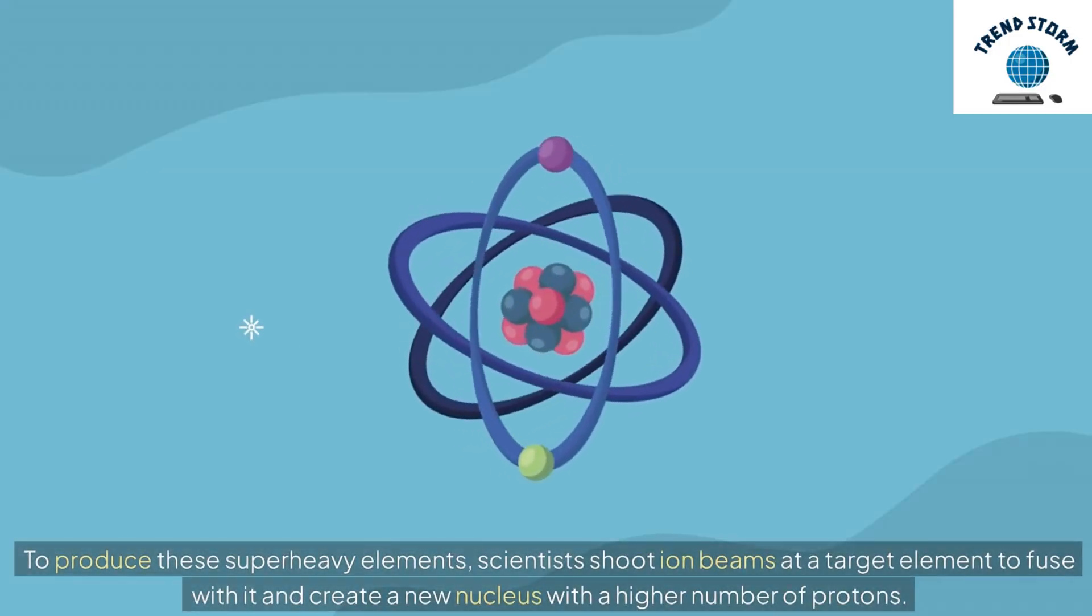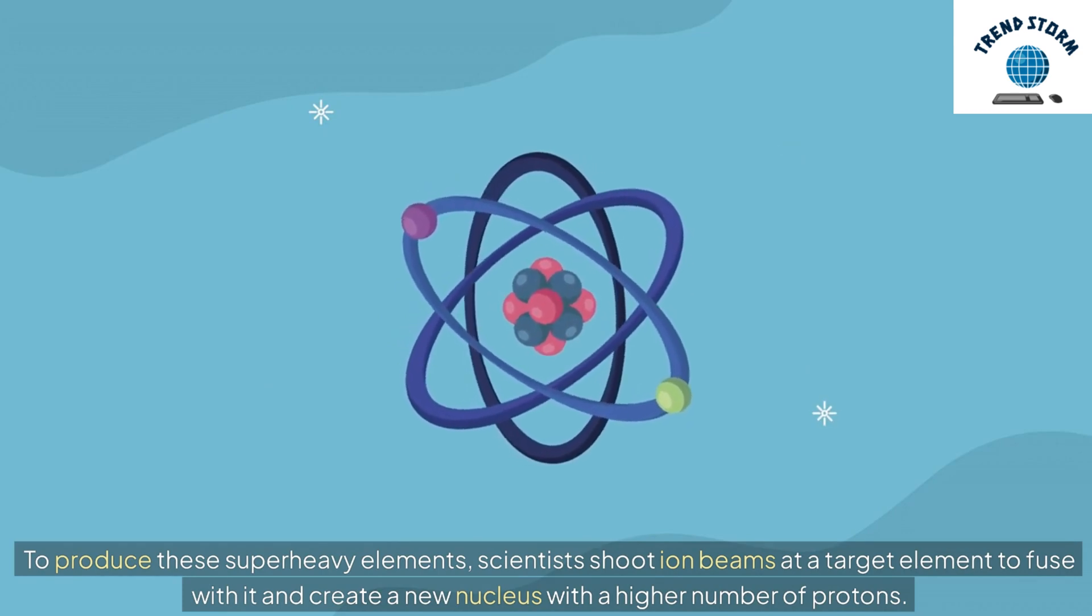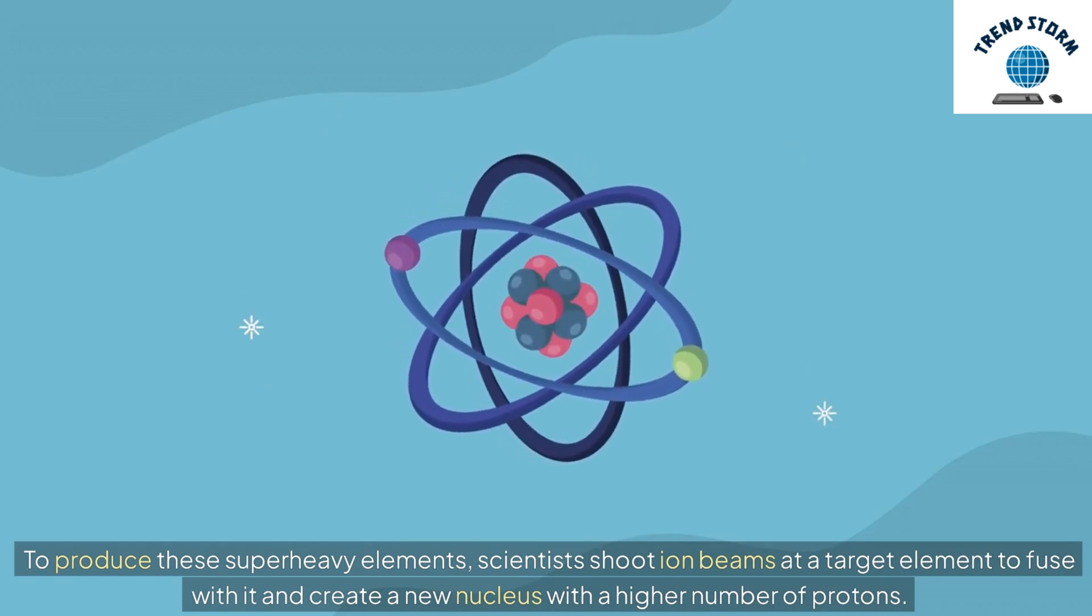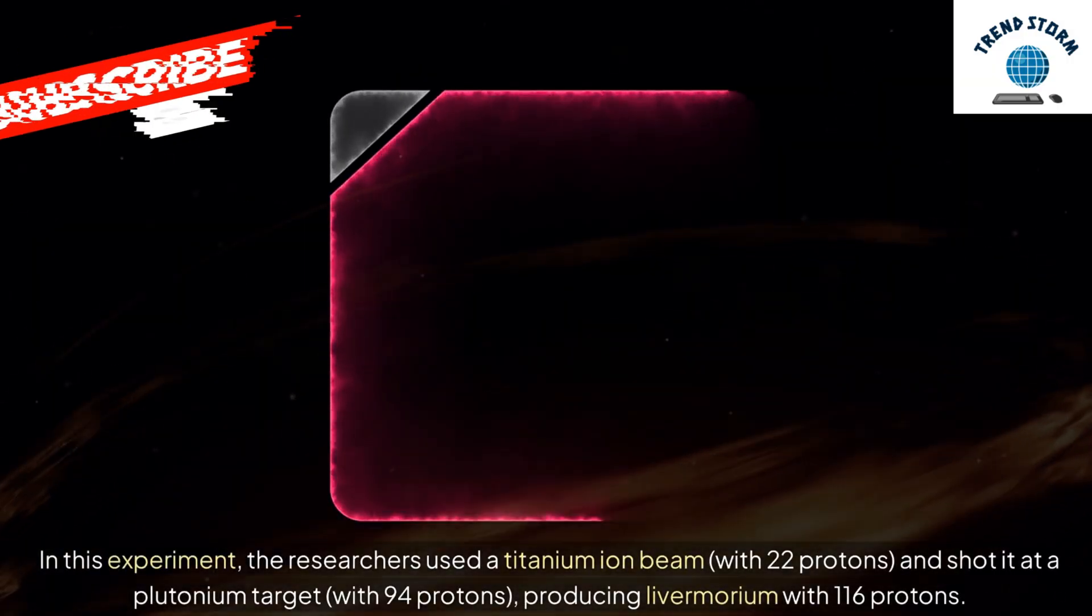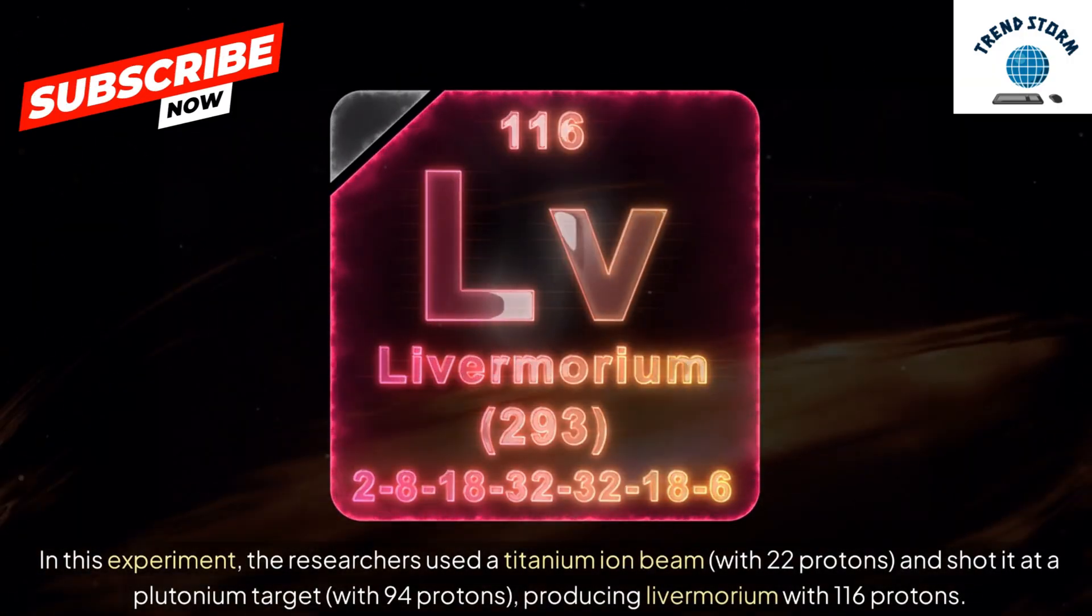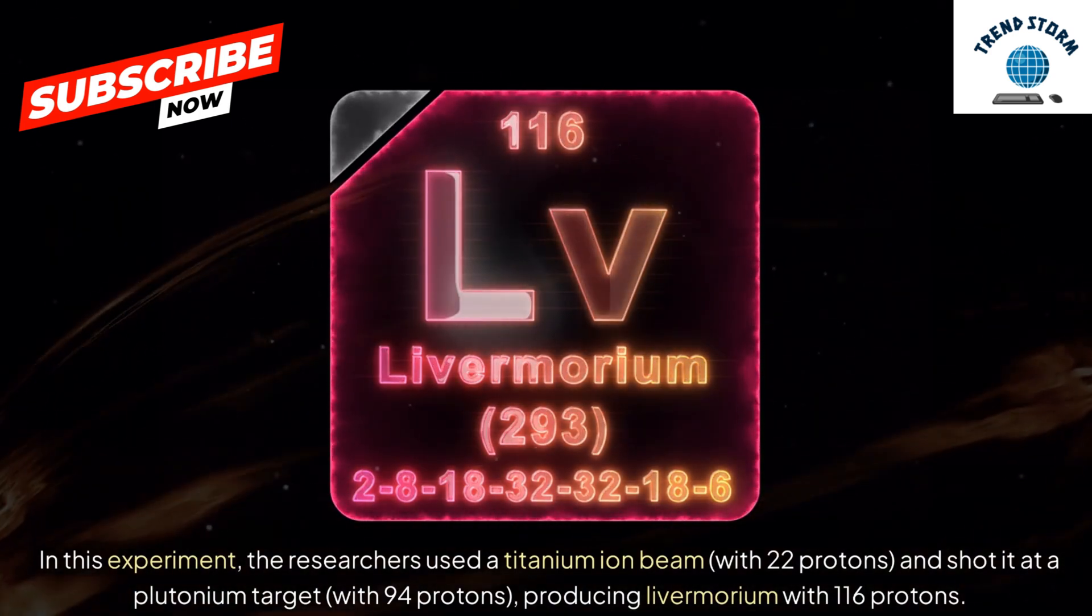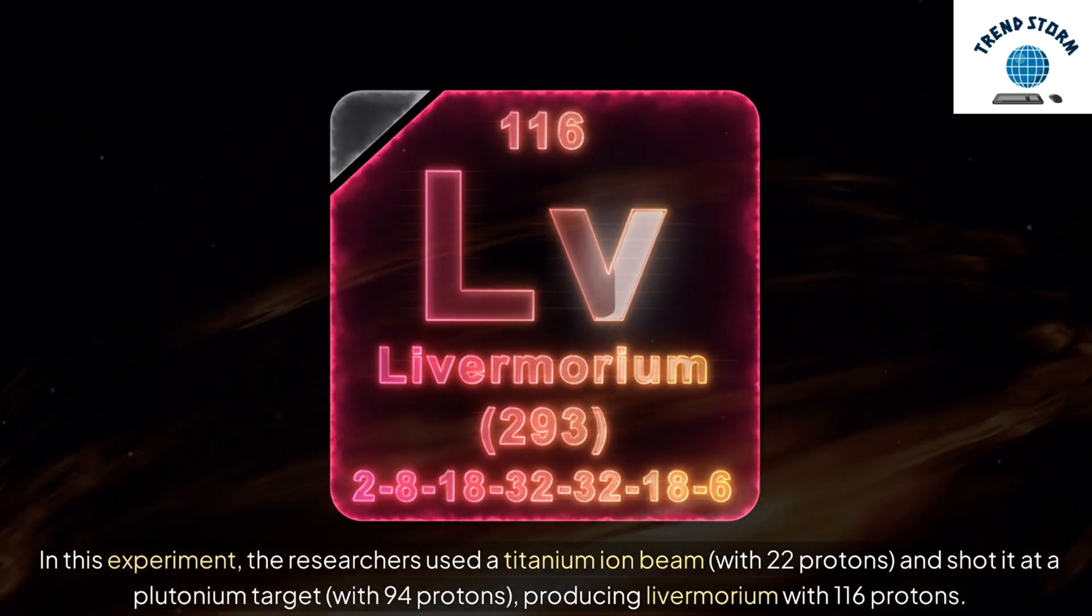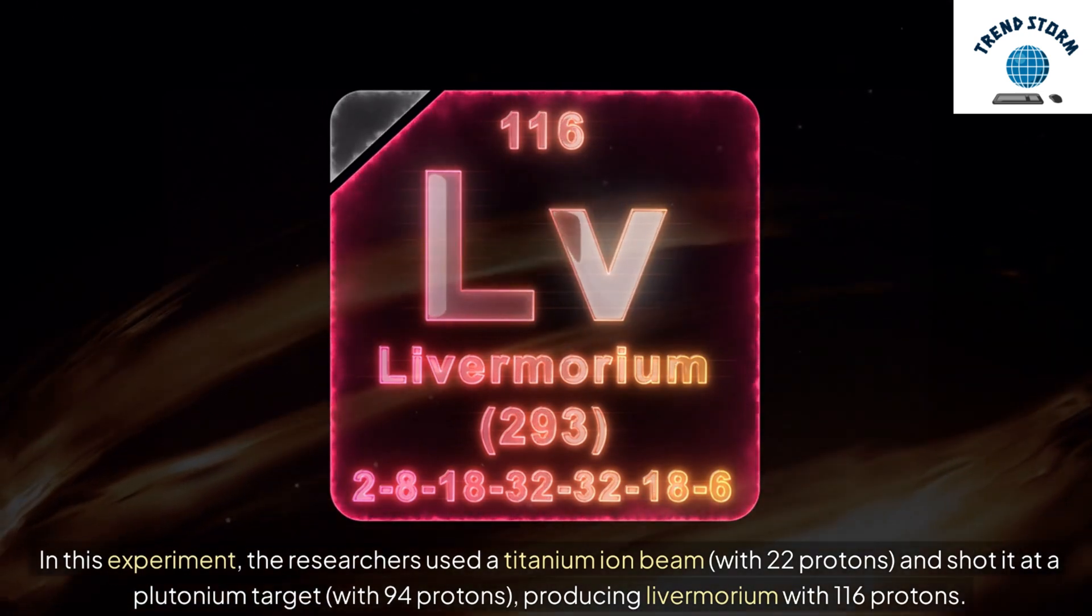To produce these superheavy elements, scientists shoot ion beams at a target element to fuse with it and create a new nucleus with a higher number of protons. In this experiment, the researchers used a titanium ion beam with 22 protons and shot it at a plutonium target with 94 protons, producing Livermorium with 116 protons.